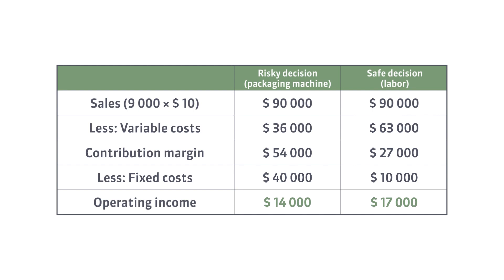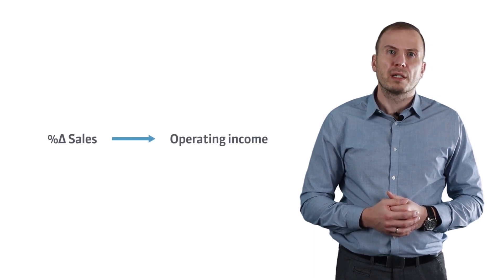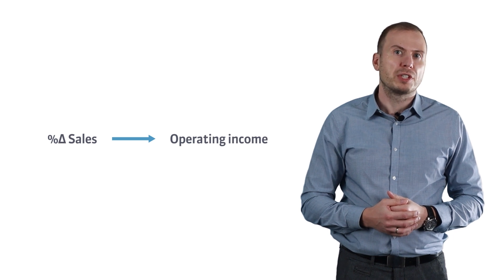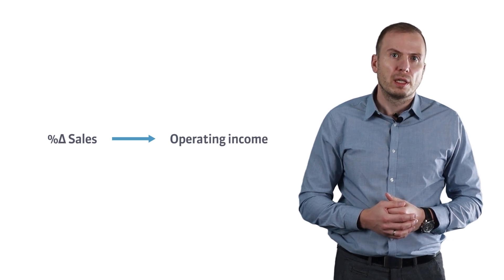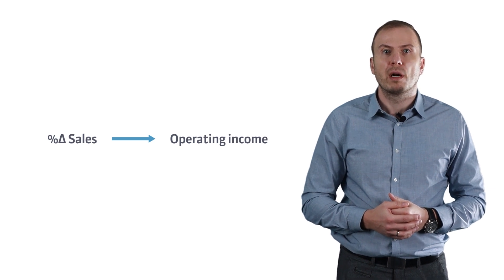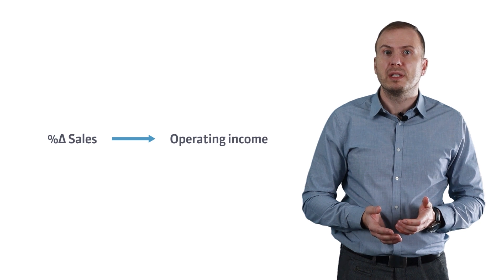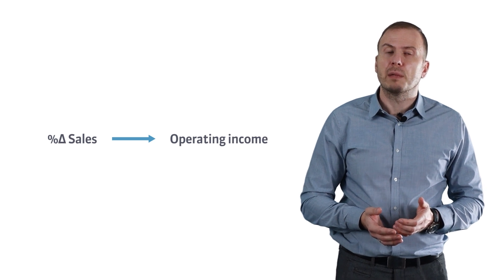When sales decrease by 10%, operating income falls by 30% for the risky version and by 15% for the safe version. The degree of operating leverage can be used to quickly estimate what impact various percentage changes in sales will have on operating income, without the necessity of preparing a detailed income statement.